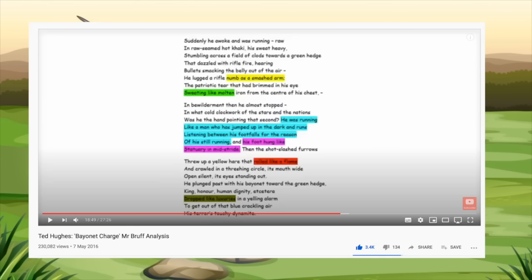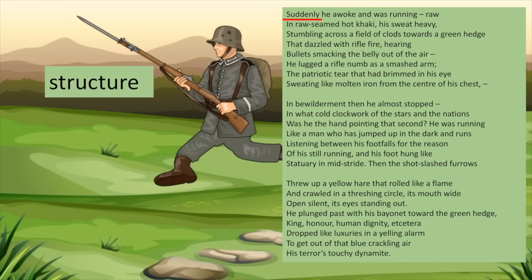In terms of Power and Conflict, Bayonet Charge is a poem which focuses on the reality of war and how its true horror is ultimately indescribable. The poem begins mid-action with the word 'suddenly' — we see the same thing in the poem Remains. Clearly something has gone before this moment, but the reader is not made aware of it. The result is that we are confused and unsure of what is happening, just like the frightened soldier.